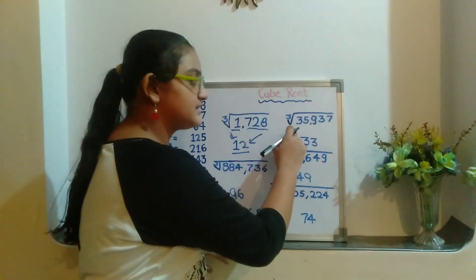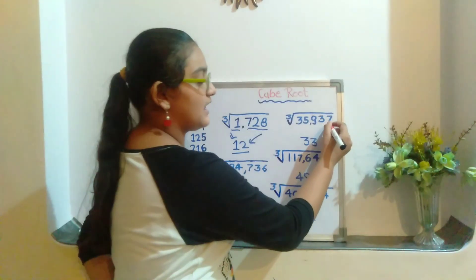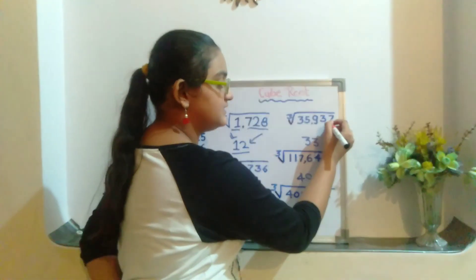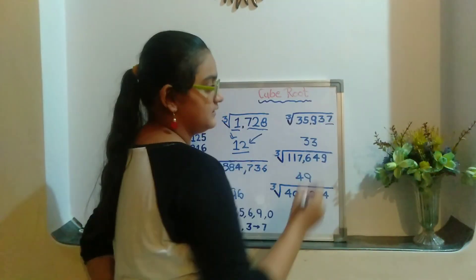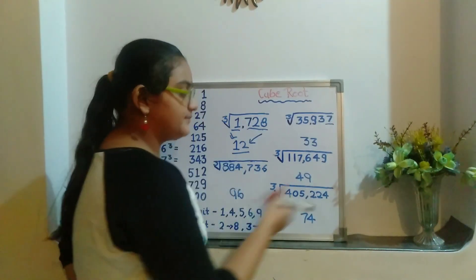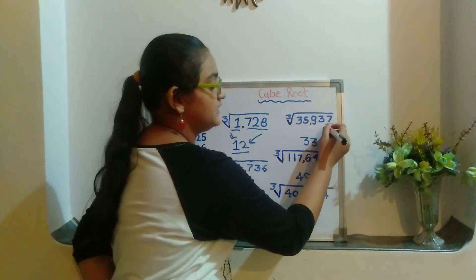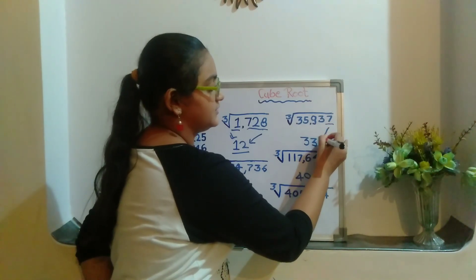Now in the next question, the last digit is 7. Now 7 is also a flipped digit, so we will convert 7 into 3.